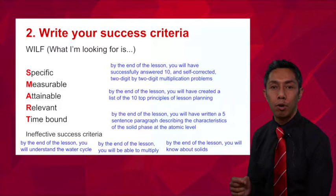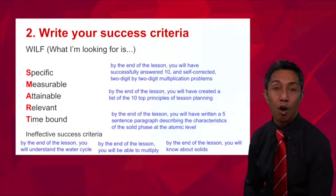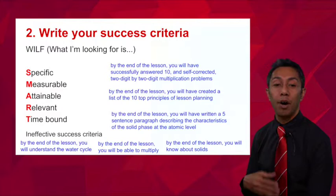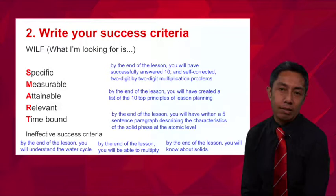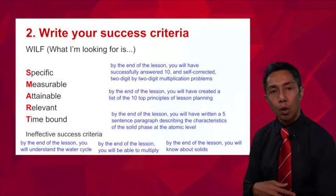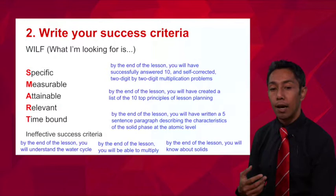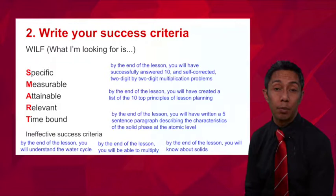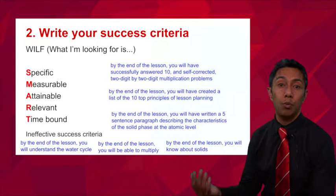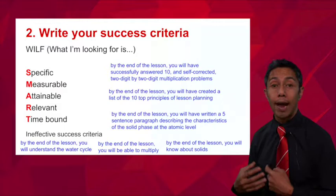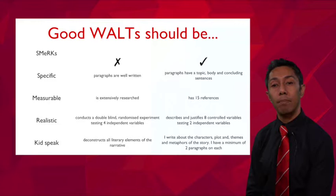There are two more examples of good SMART success criteria. On the other hand, ineffective success criteria include examples like 'by the end of the lesson you will understand the water cycle' — understand is not measurable. Do you want them to write a paragraph? Draw a diagram? Record a two-minute explanation about the water cycle? Other ineffective examples are 'you'll be able to multiply' or 'you'll know about solids' — what do you want them to know about solids, and how much? The more detail you can provide to your students, the clearer it is to both you and your students about what constitutes successful learning.